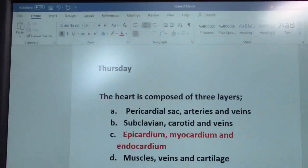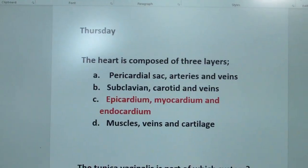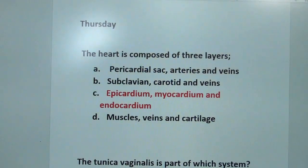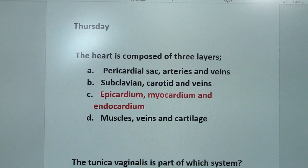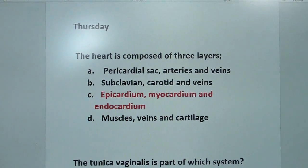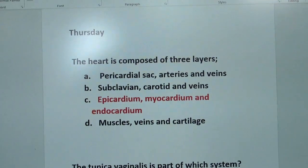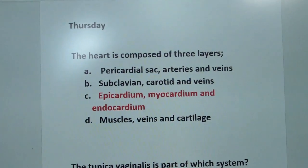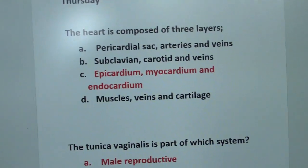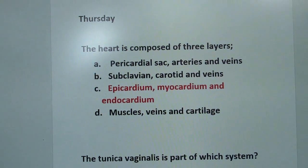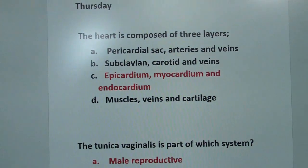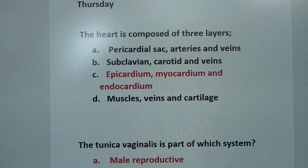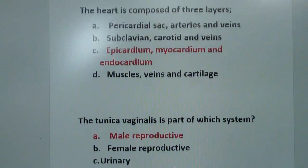Two questions from yesterday. First one: the heart is comprised of three layers — what are they? The answer is C: epicardium, myocardium, and endocardium. Epi means outer, myo means muscle, and endo means within.